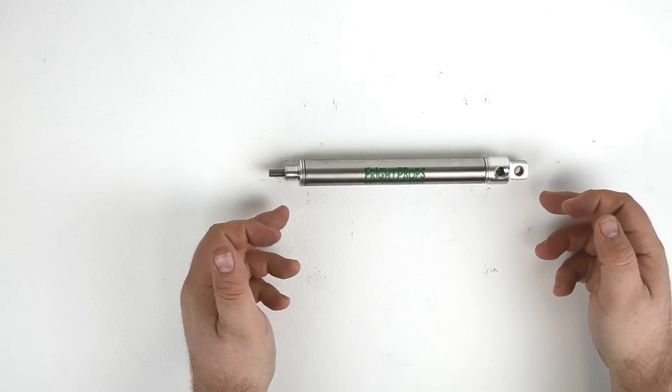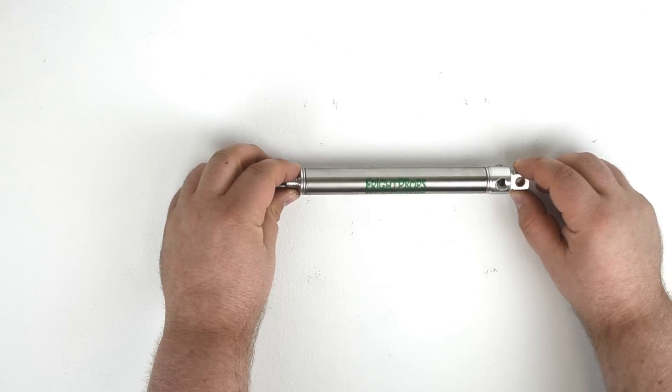You'll notice that this single acting cylinder is also a universal mount, so it can be mounted at the nose and the tail.